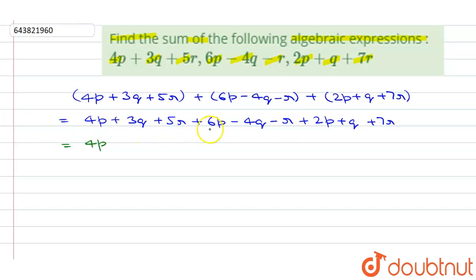So plus 4p plus 6p plus 2p. Now plus 3q minus 4q plus q plus 5r minus r plus 7r.